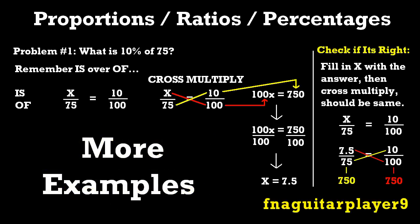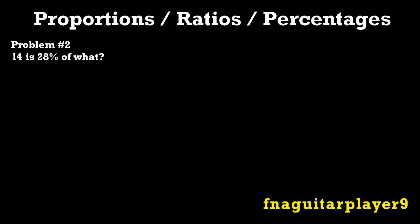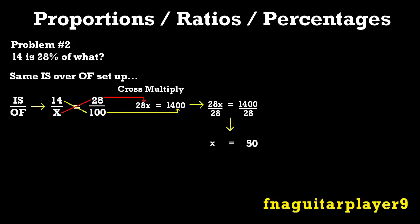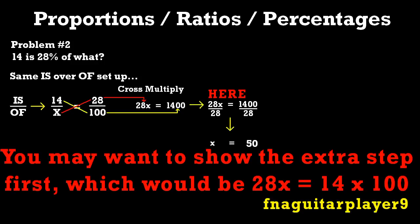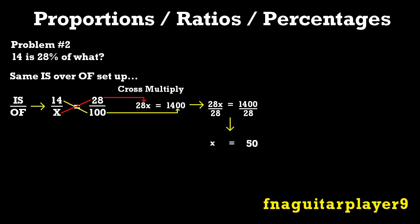Now the second problem we're looking at is trying to find the OF number. It says 14 is 28% of what? So the way you'd write this, since you know the IS now, which is 14, you write 14 over x. And your percentage again is 28 over 100. Now we cross multiply. 28x equals 1400. Then you divide by 28 to get x by itself. And you divide by 28 on both sides, so you get x equals 50.